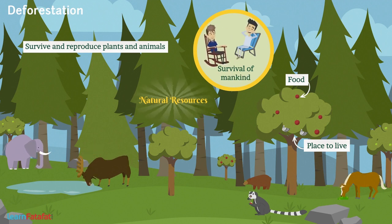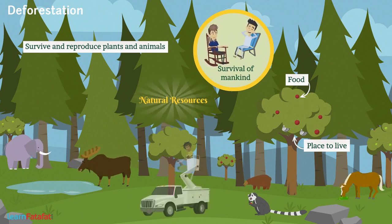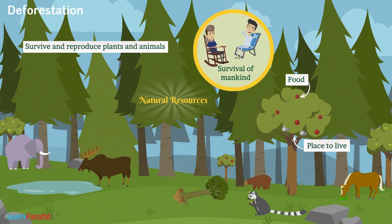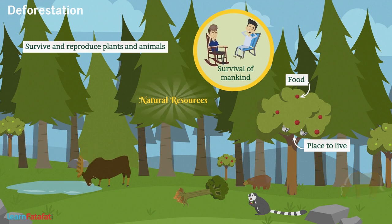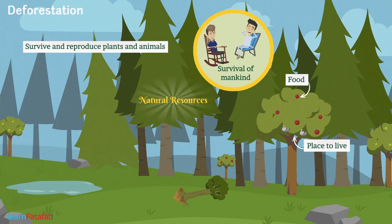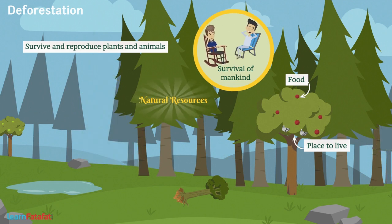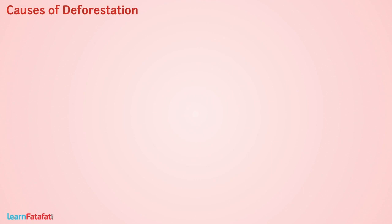Deforestation is the process of cutting down of trees in a forest. Due to deforestation, these resources have a serious threat to their survival. Trees in the forest are cut for different purposes. Let us now understand the causes of deforestation.